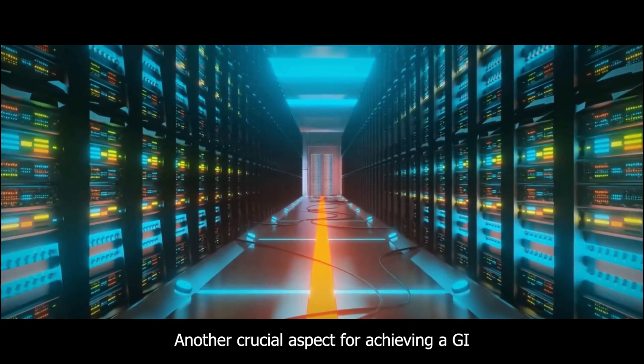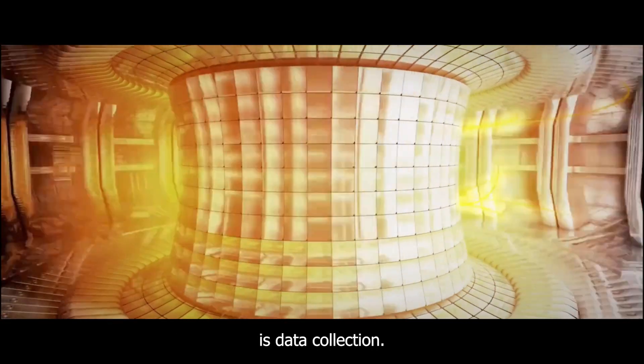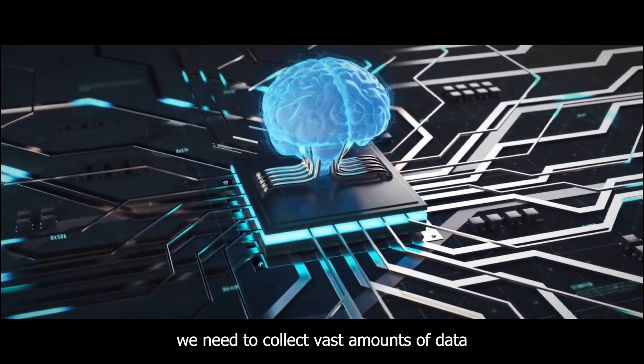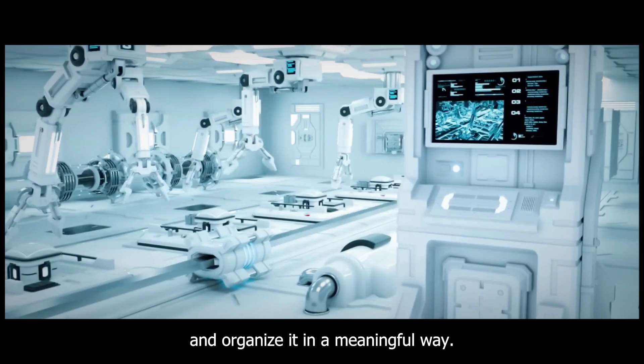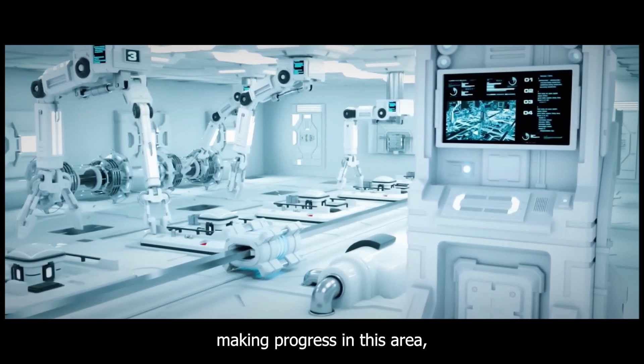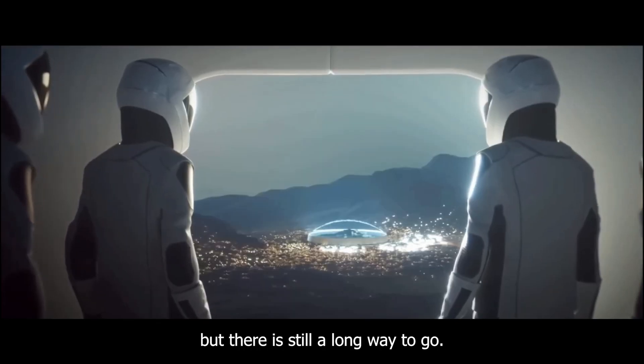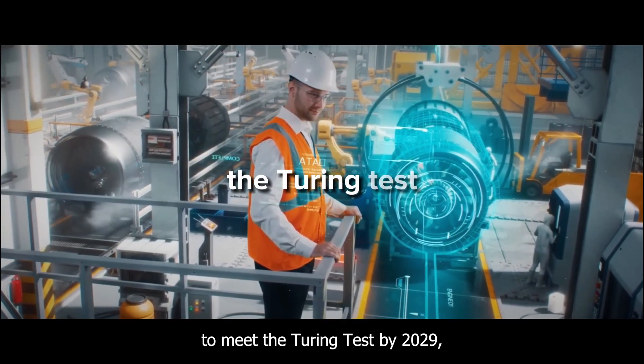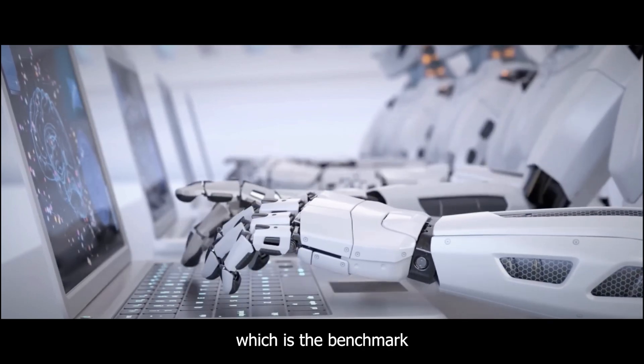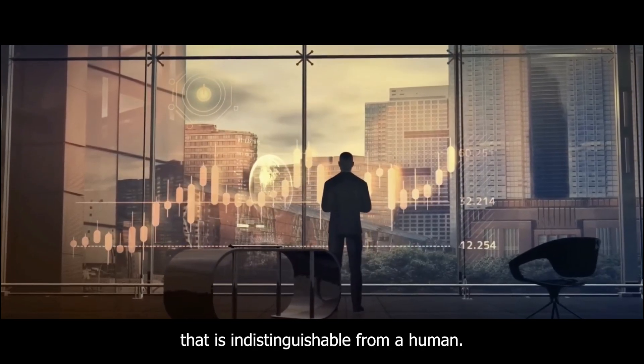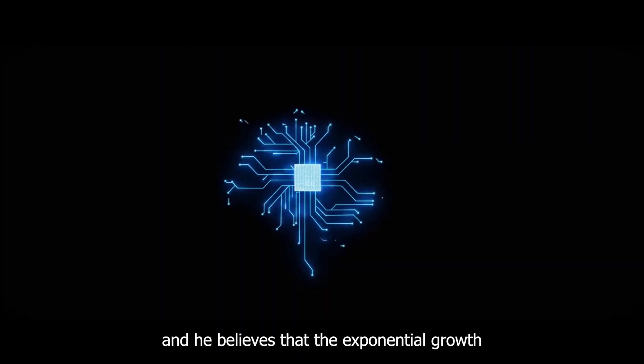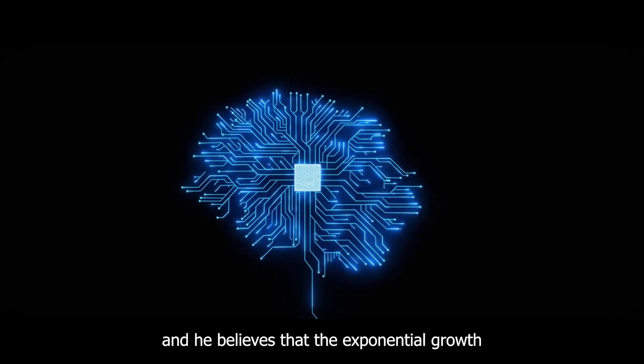Another crucial aspect for achieving AGI is data collection. In order to simulate biology for different kinds of problems, we need to collect vast amounts of data and organize it in a meaningful way. Ray believes that we are making progress in this area, but there is still a long way to go. Despite these challenges, Ray is confident that we are on track to meet the Turing test by 2029, which is the benchmark for creating an AI system that is indistinguishable from a human. He has been predicting this achievement since 1999, and he believes that the exponential growth of computation and algorithmic improvements will make it possible.